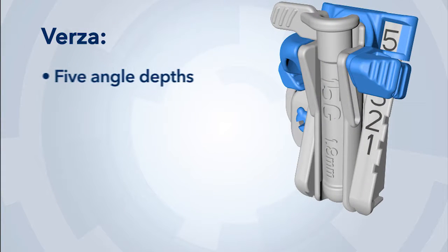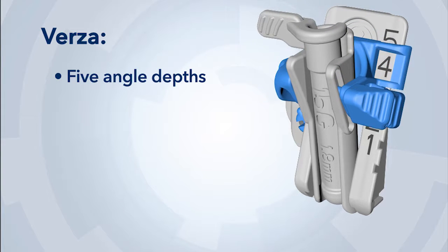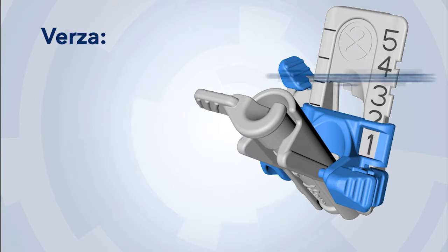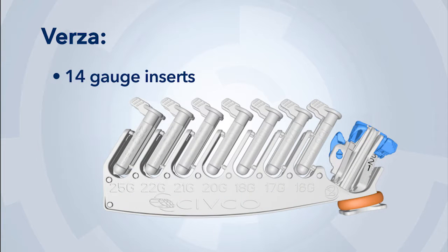Delivering expanded clinical utility, the Versa Guide provides five angle depths to accommodate a wide range of anatomical targets and supports the market's largest range of interventional devices.